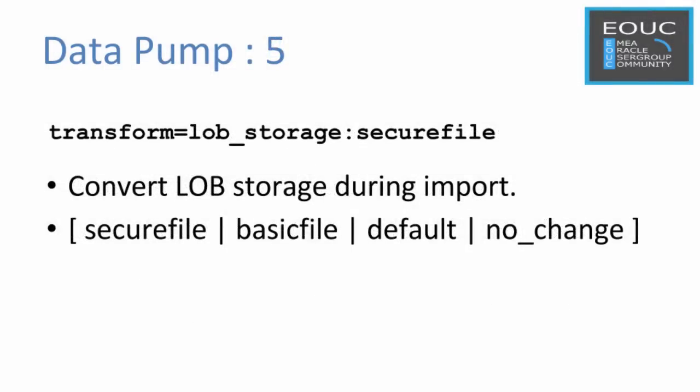The transform parameter now includes a LOB storage clause. This allows you to set the LOB storage at import time. Secure file means store as secure file. Basic file means store as basic file. Default means store as the database default for LOBs. And no change means use the LOB characteristics that were used during the export.